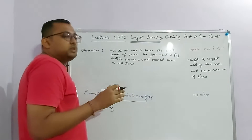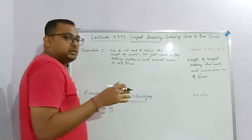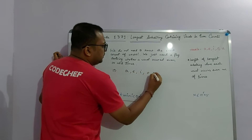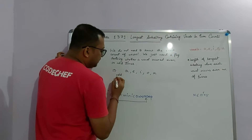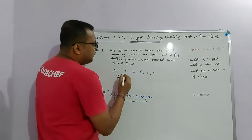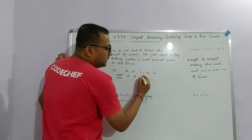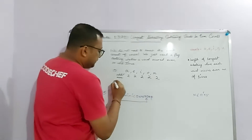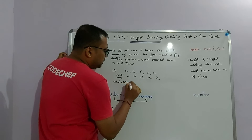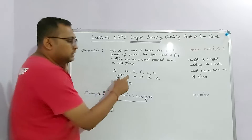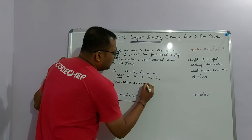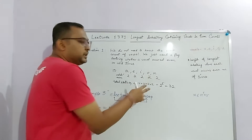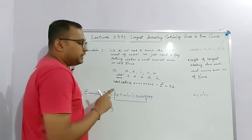This gives us the intuition that this problem can be solved using bitmasks. The vowels are A, E, I, O, U — five vowels, each with two possible states (even or odd). The total number of states is 2×2×2×2×2 = 2 to the power 5, which is 32 possible states. Since 32 is small, we can use a bitmask to represent these states and solve the problem efficiently.